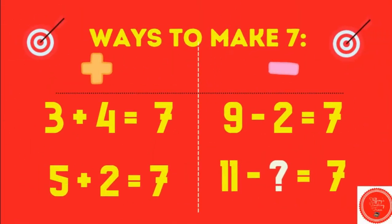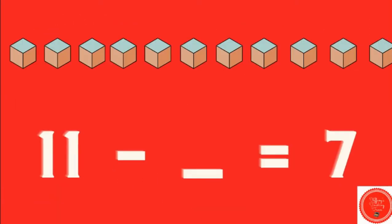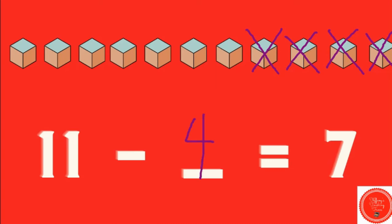Let's try one more subtraction problem. Eleven minus what equals seven? So let's start with eleven, ten, nine, eight, seven. That's our target, so I'm going to stop there. How many did we cross out? Four. Eleven minus four equals seven. Wonderful.